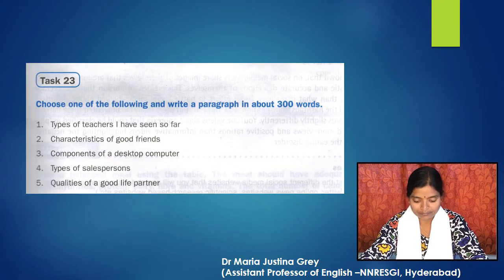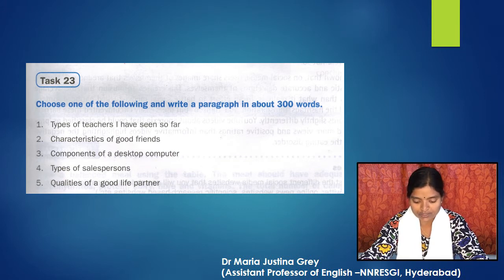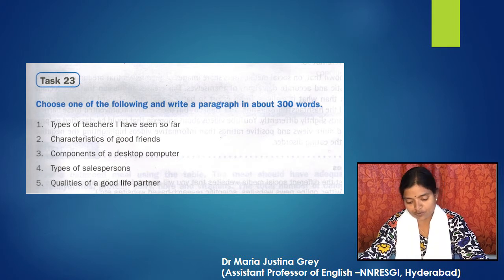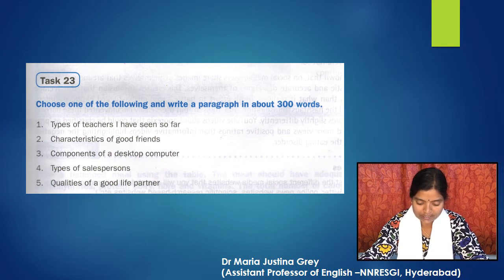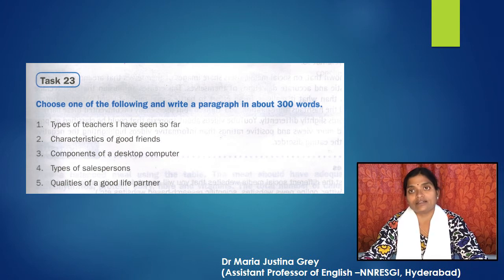Task 23: choose one of the following and write a paragraph in about 300 words. 11. Types of teachers I've seen so far. 12. Characteristics of good friends. 13. Components of a desktop computer. 14. Types of salespersons. 15. Qualities of a good life partner.